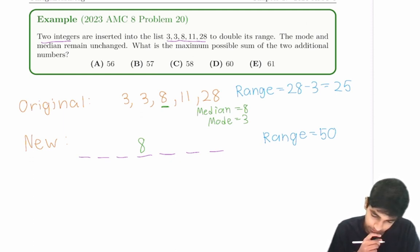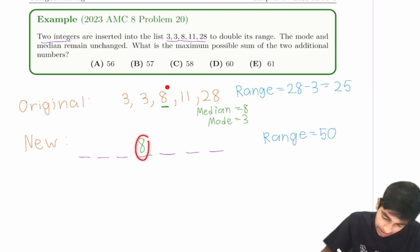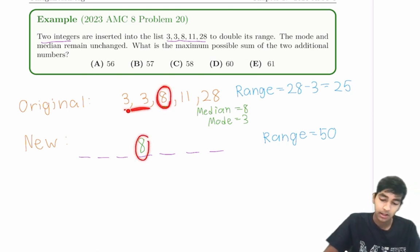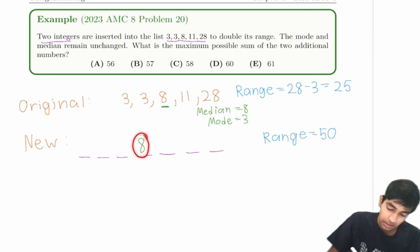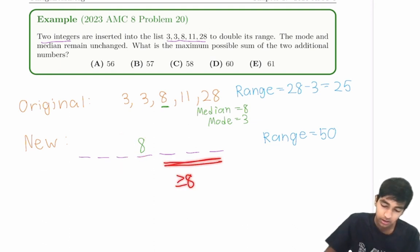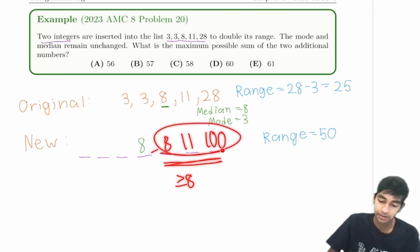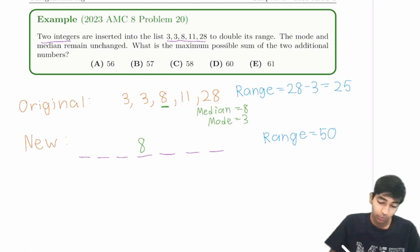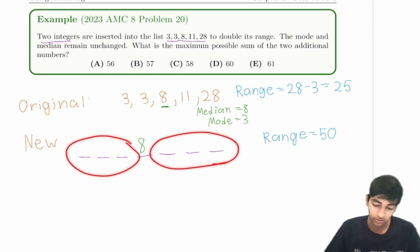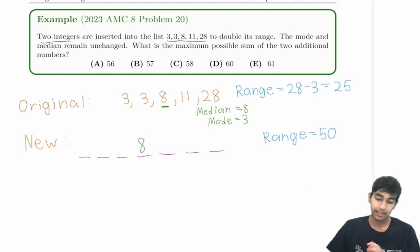So if the middle term is 8, notice that in the original sequence there was two numbers less than 8 and two numbers more than 8. So similarly, in this new sequence, there must be three numbers that are less than or equal to 8. It could be equal to 8, because if we have an 8 here, then the number is still less than or equal to 8. And then we have to have three numbers that are greater than or equal to 8.